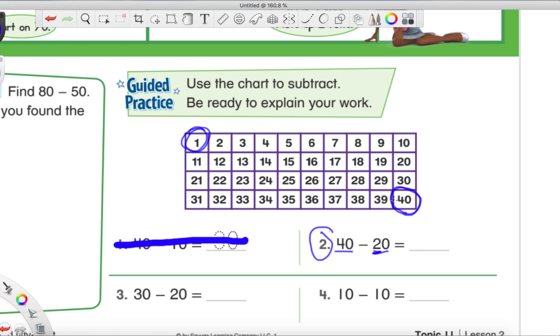So that means we're going to take two jumps up towards this one, because we are subtracting. So we jump up. Oops, sorry about that. One, two. And then we stop. We land on 20. So now we know that 40 minus 20 is 20.